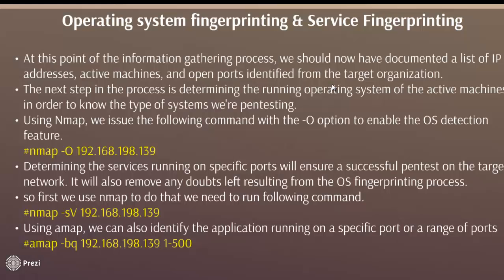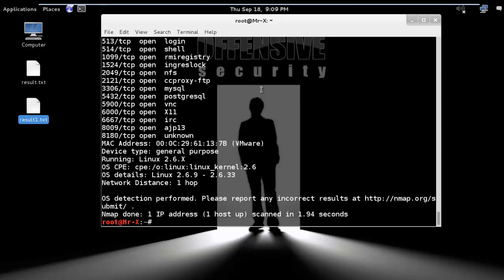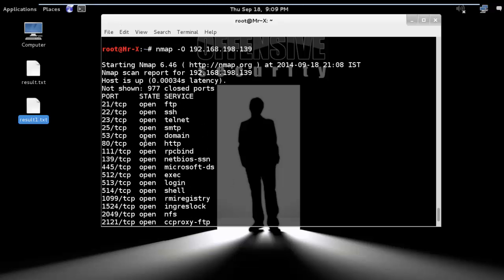Next is operating system fingerprinting and service fingerprinting. At this point in the information-gathering process, we should have documented a list of IP addresses, active machines, and open ports identified from the target organization. The next step is determining the running operating system on the active machines, in order to know the type of system we are pen testing. Using nmap, we issue the following command with the -O option to enable OS detection. Run nmap -O [target IP address] and you can see the operating system details, open ports, and services.